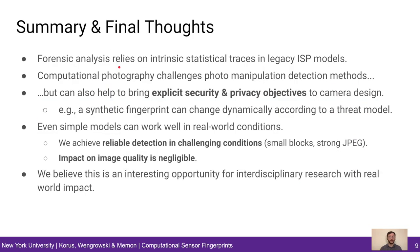To summarize, forensic analysis relies on intrinsic statistical traces in legacy ISPs. Computational photography challenges manipulation detection techniques and may render them obsolete. However, it can also help us include explicit security and privacy objectives in camera design. We show that even simple models can work in challenging real-world conditions — for example, we were able to get good detection results for small image blocks and strong JPEG compression. At the same time, the impact on image quality remains negligible. We believe this is an interesting opportunity for interdisciplinary research with real-world impact.